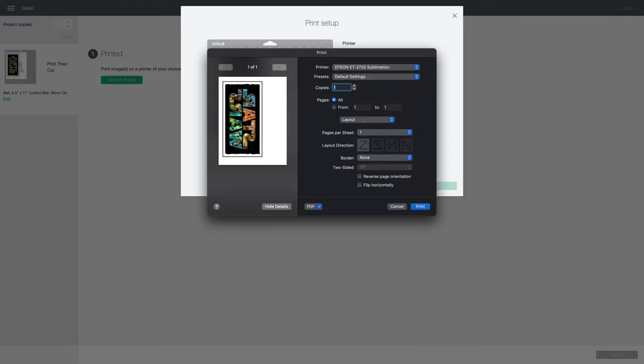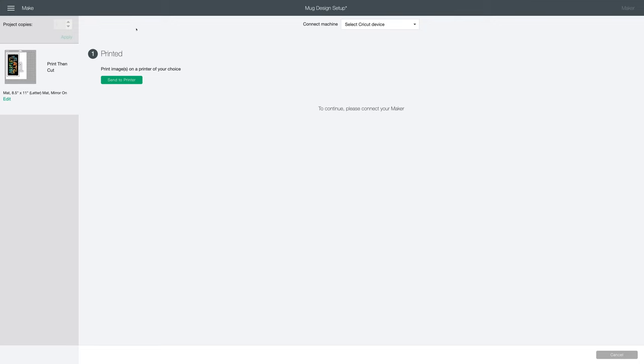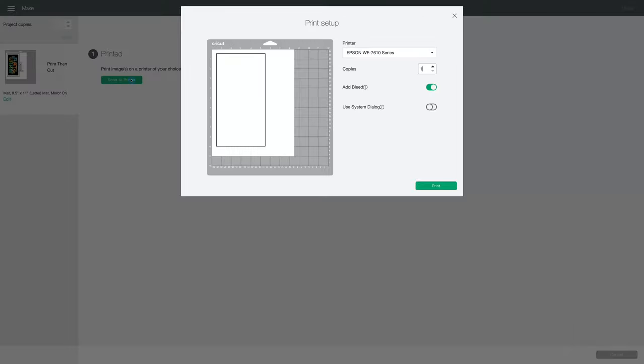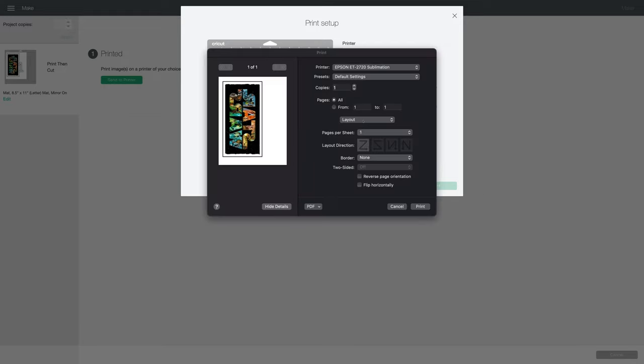Someone mentioned that when they click on layout they don't see the options that I see on mine. Well that happens to me sometimes too. All I have to do is click cancel, go back to send to printer and choose it again. Choose my correct sublimation printer again, turn on use system dialog again and click print again. I don't know why it does that sometimes, but it does. Just click cancel and do it again.